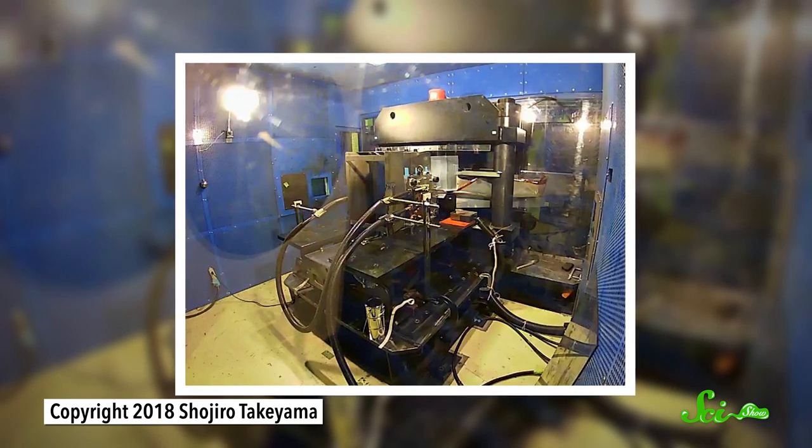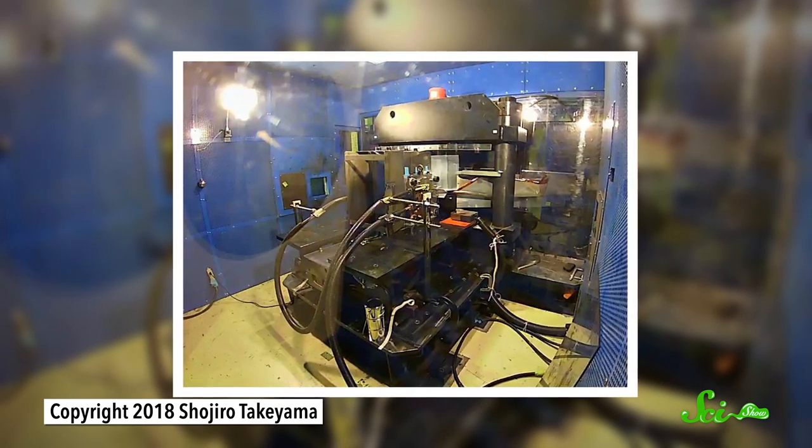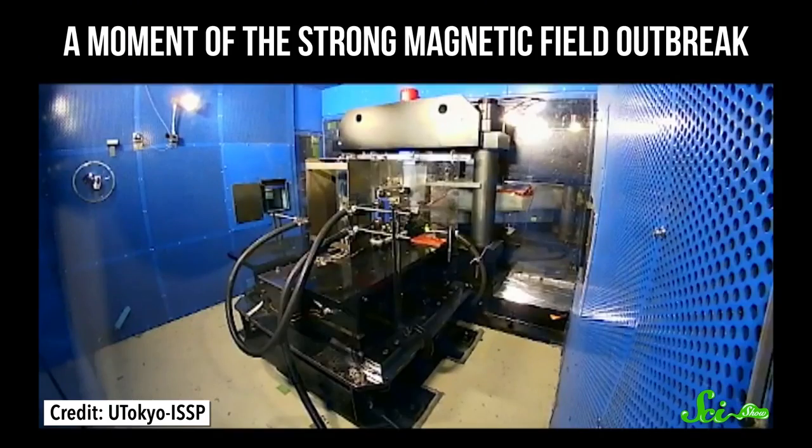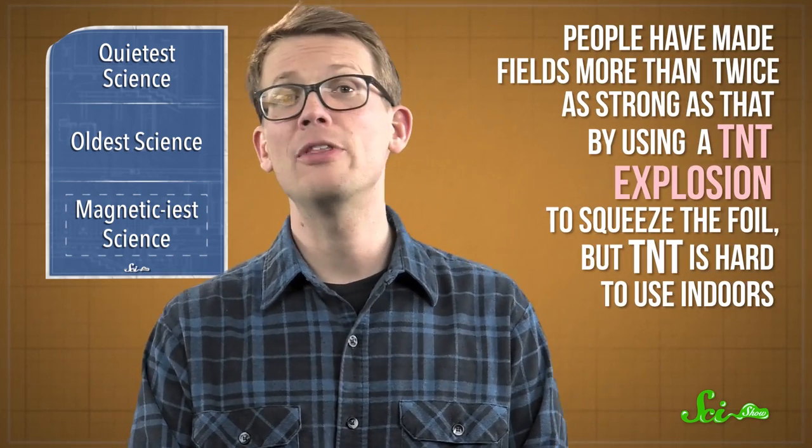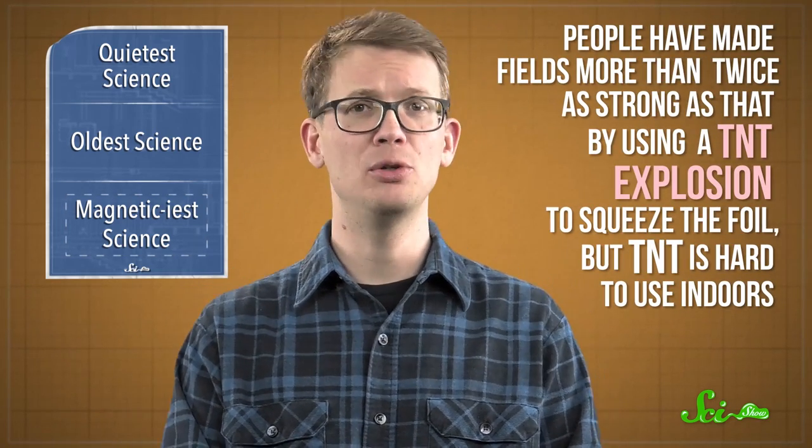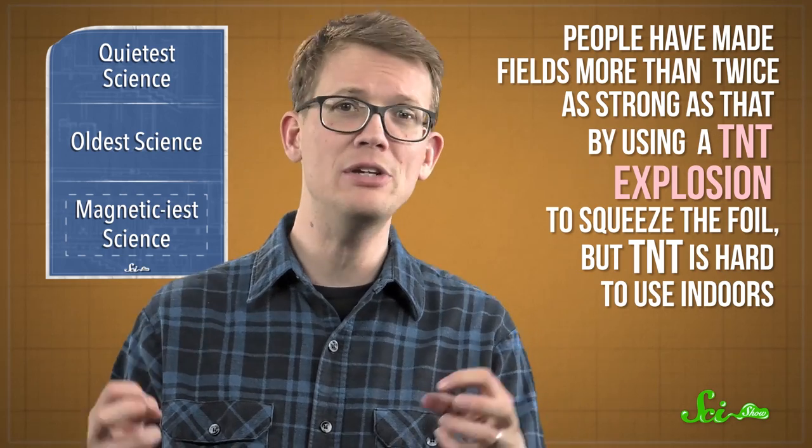So they built a shell around the experiment that could handle debris from a field that strong. Instead, they got twelve hundred Tesla and some exploding equipment. To put that into perspective, if you had a magnet that strong the size of a watch battery, you could probably lift an entire airplane.